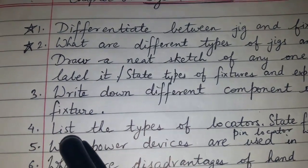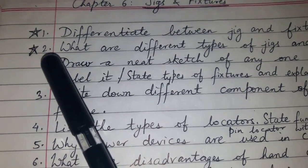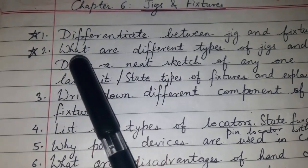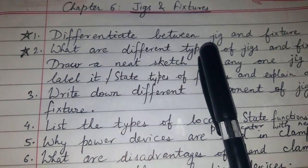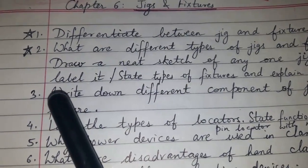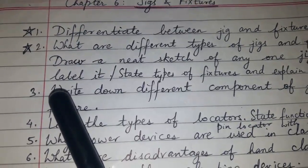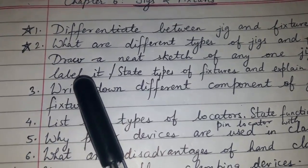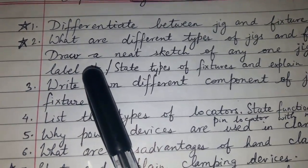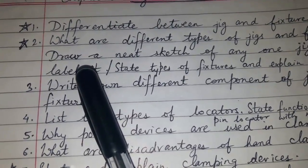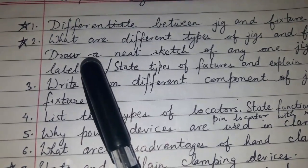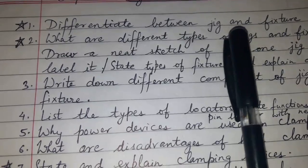Chapter number six jigs and fixtures question bank — all the questions are important, but those with a star are more likely questions. Differentiate between jigs and fixtures; once it was asked to differentiate between jigs and fixtures with respect to definition, cost, construction, and application.